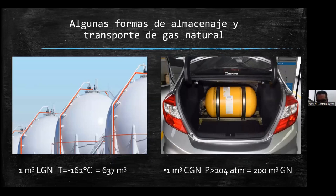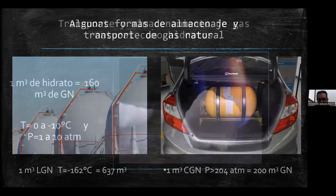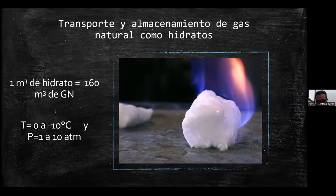Para el gas natural comprimido, se sabe que 1 metro cúbico equivale a 200 metros cúbicos a condiciones estándar, pero se necesitan presiones mayores a 204 atmósferas. Una alternativa es el uso de hidratos de gas, porque 1 metro cúbico de hidrato equivale a 160 metros cúbicos de gas natural, pero a diferencia de los otros dos procesos, se necesitan temperaturas de alrededor de 0 a menos 10 grados centígrados y presiones de entre 1 y 10 atmósferas.